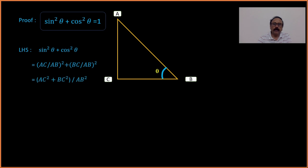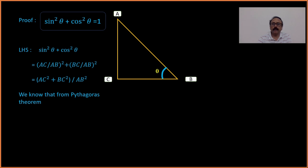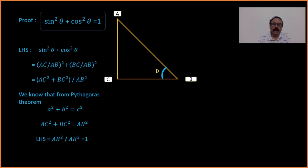Similarly, cosθ = base/hypotenuse = BC/AB. So we get (AC/AB)² + (BC/AB)². Here AB² is the common denominator, giving (AC² + BC²)/AB². By the Pythagoras theorem, perpendicular² + base² = hypotenuse², so in this figure AB² = AC² + BC². Therefore the numerator AC² + BC² equals AB², and AB²/AB² = 1.